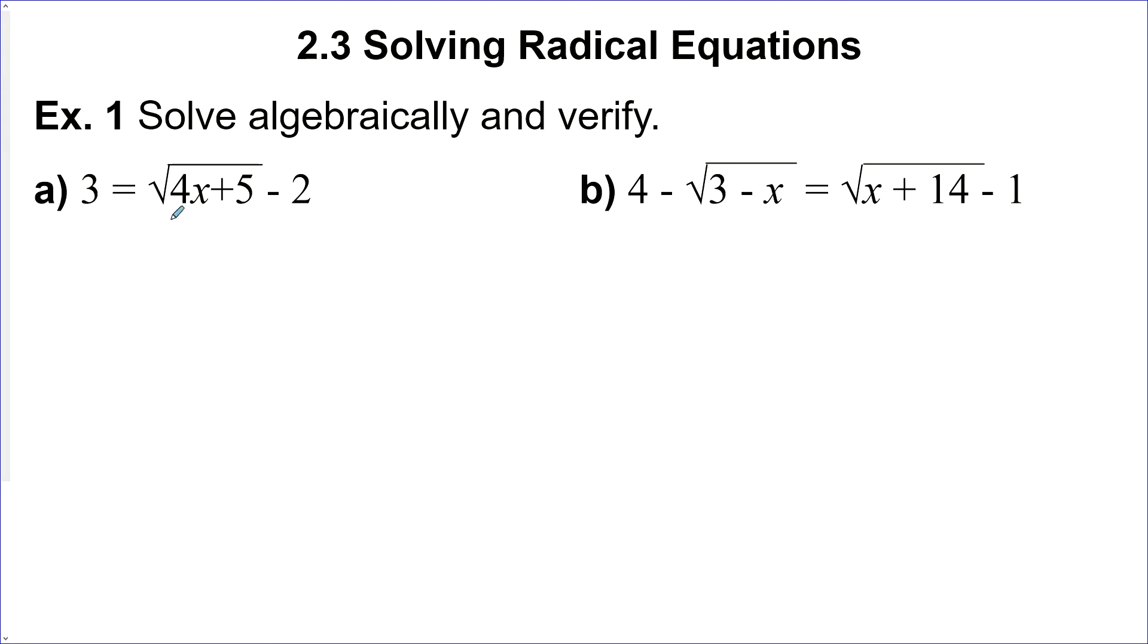So the first one here, we probably want to isolate this radical. On this side it already is, by adding two on both sides. And then we get five is equal to this radical. And then we can square both sides so that we can get rid of the radical. So 25 is equal to, the square root and the squared cancel on this side, we're just left with 4x plus 5. Now minus 5 on both sides, I get 20 is equal to 4x, divide by 4 on both sides, I get that x is equal to 5.